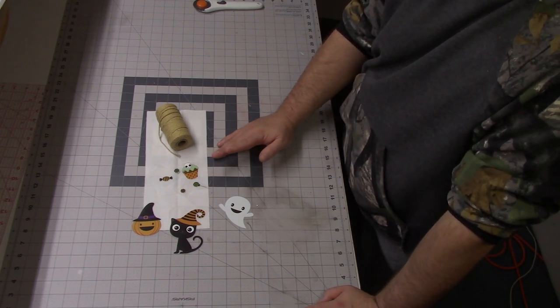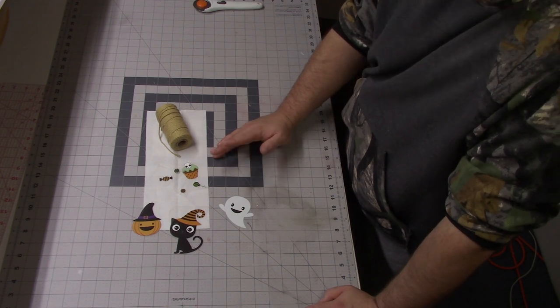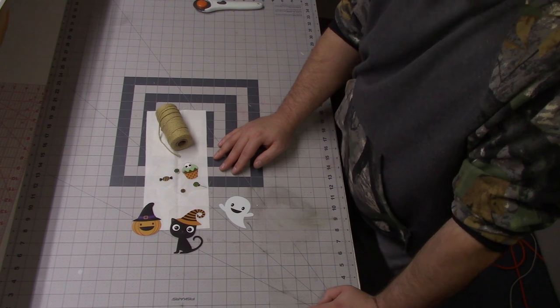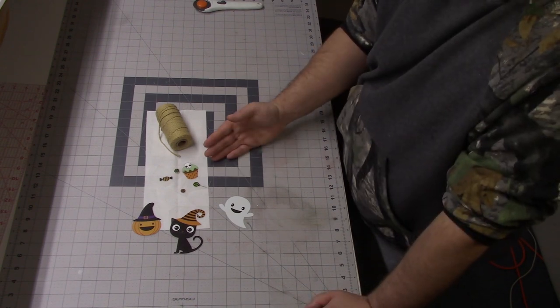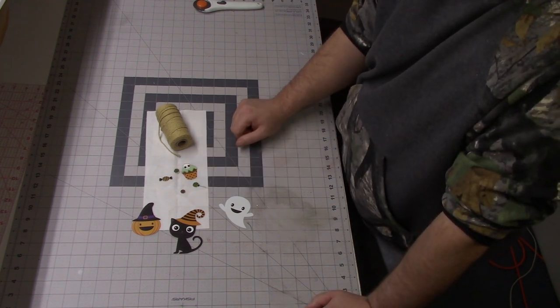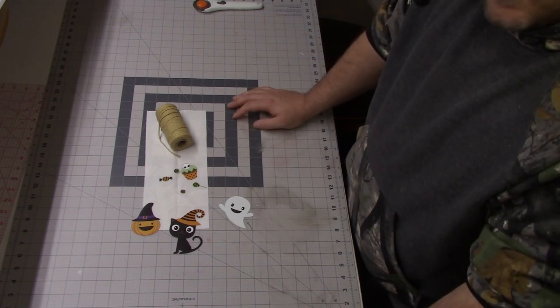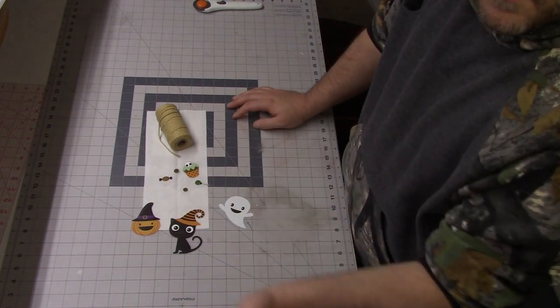I believe it was under $10 for my pack. You could also get iron-on patches, you could use your Cricut if you had one, or you could just use paint and some stencils. Actually, you don't have to put anything on the bag if you don't want to. If you had a Halloween print that's just fine.